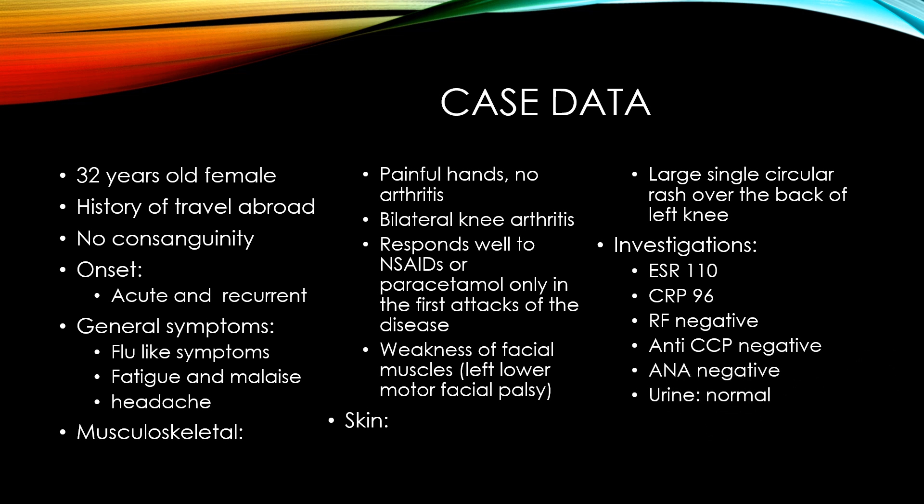Investigations: ESR was elevated at 110, CRP also elevated at 96. Rheumatoid factor negative, anti-CCP negative, ANA negative, urine normal. CBC showed leukocytosis. To summarize: bilateral knee arthritis with bilateral hand arthralgia, recurrent flu-like symptoms with fatigue and malaise, headache, elevated ESR and CRP, a single rash over the back of the left knee, but with negative serology — RF, anti-CCP, and ANA all negative.